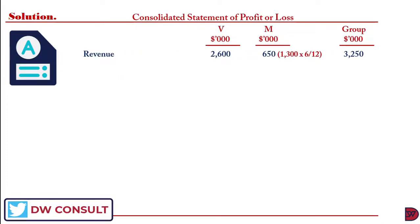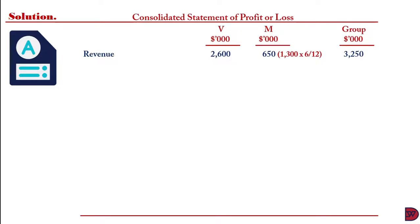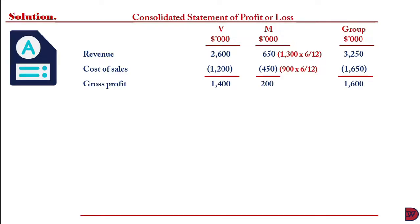We are preparing a consolidated statement of profit or loss for the Viki group for the year ended 31 December 2015. Revenue is $2,600 for Viki. For the subsidiary, because it was purchased six months into the year, we halve their figures. Their revenue was $1,300; multiplied by 6 over 12, we get $650. Summing these gives the group revenue. For cost of sales, we take the entire figure for the parent and half of the subsidiary, which gives $450, producing the group total.